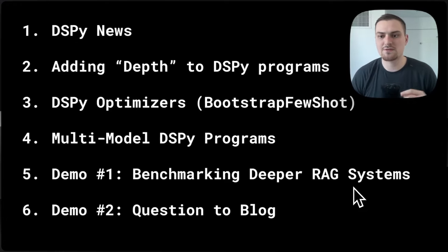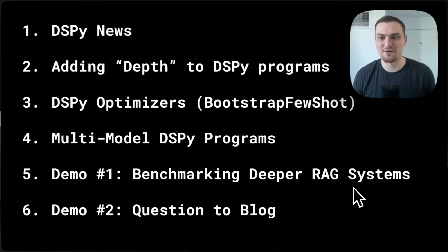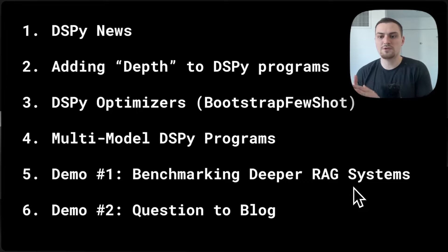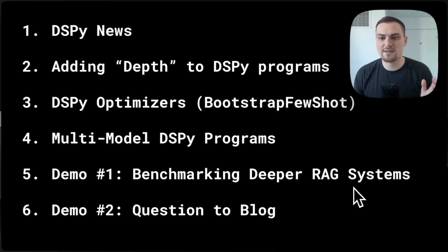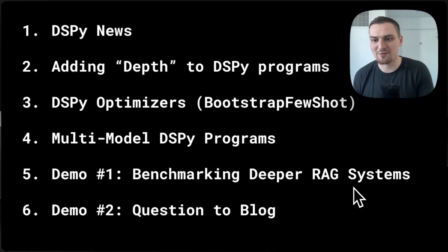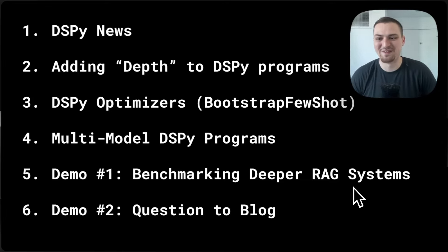This video is going to take a deep dive into Bootstrap FewShot. To break apart the name Bootstrap FewShot: we're bootstrapping a trace through our program by taking one of the inputs and using the highest capacity model we can find — say typically GPT-4 or Gemini Pro 1.5. Let's just say GPT-4.